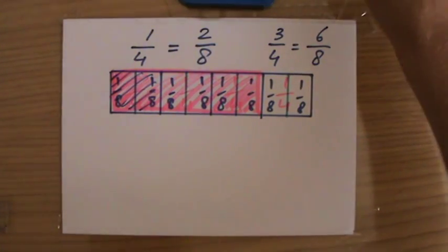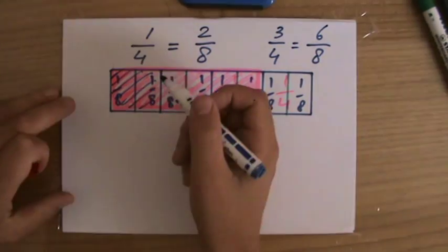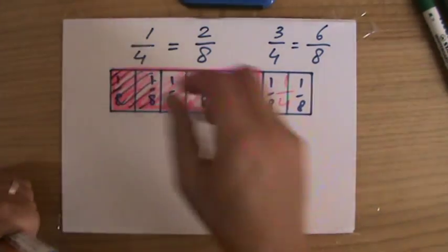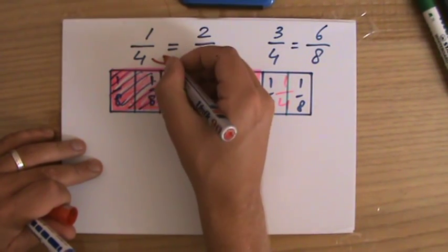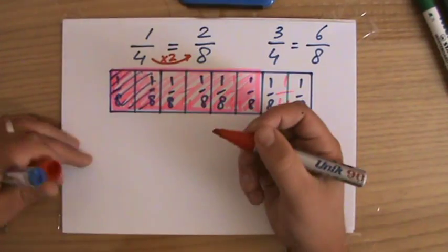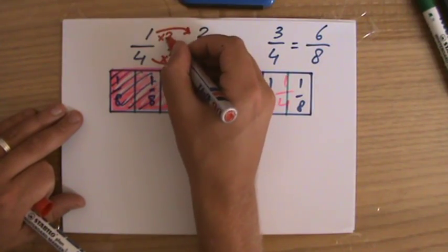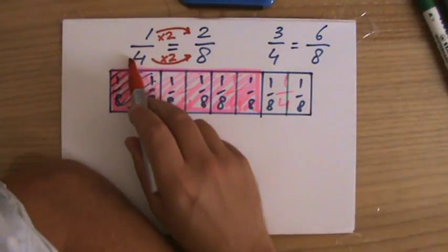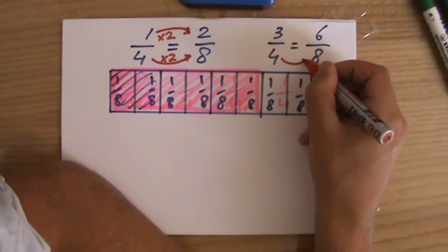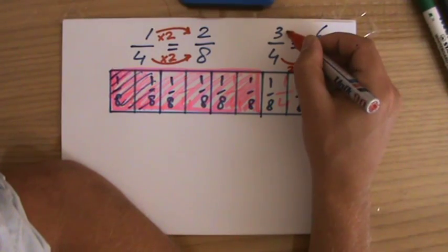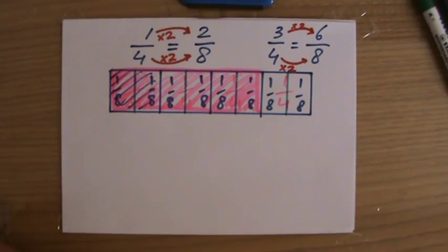Do you draw a piece of chocolate every time you have equivalent fractions? No. How does it work? If I multiply my denominator at the bottom by two, for it to be an equivalent fraction I have to multiply the numerator at the top by two as well. Four times two is eight, one times two is two. I have to multiply that one by two for it to be equal, for it to be equivalent.